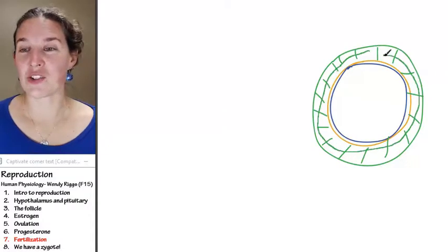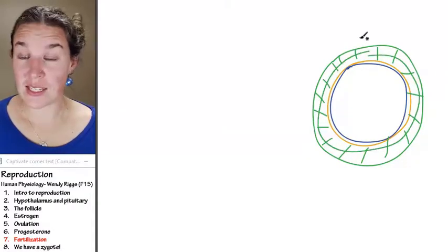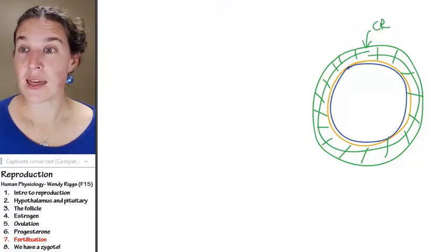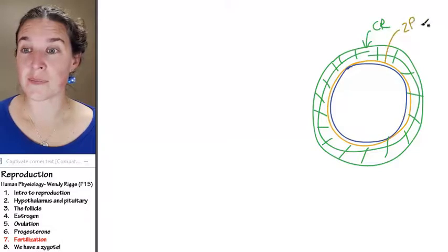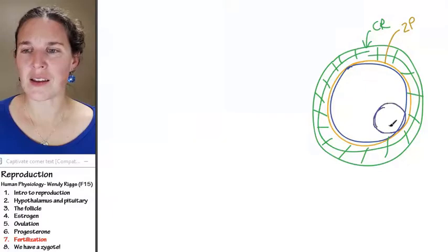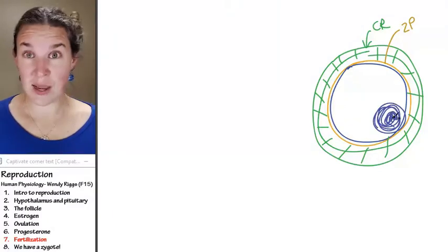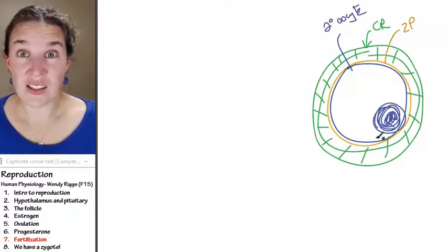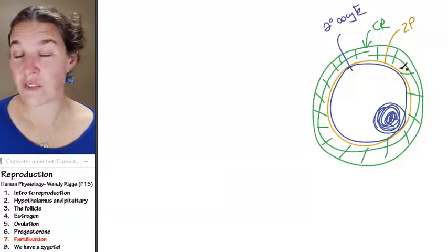What did I just draw? This is corona radiata. And this is zona pellucida. And who's this guy? That's my nucleus. And this is my secondary oocyte. And this is now chilling in the fallopian tube with just 24 hours to live.